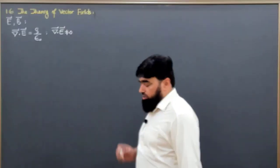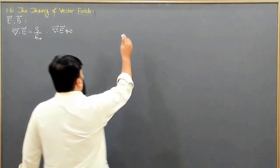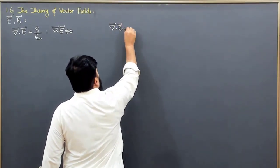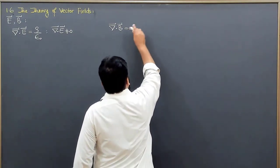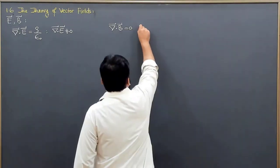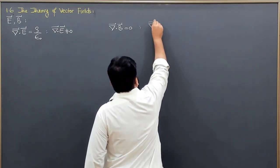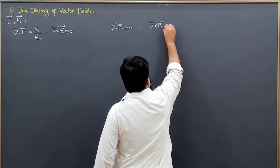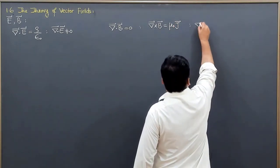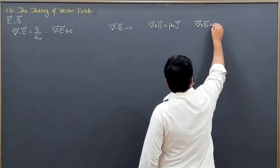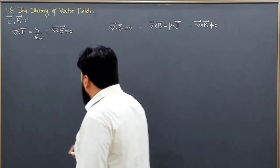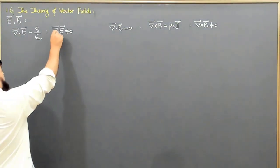Similarly, for the magnetic field, the divergence of the magnetic field is equal to zero. Moving towards the non-zero component, the curl of the magnetic field is equal to μ₀J, meaning the curl of the magnetic field is not equal to zero — it is non-zero. We will now discuss the physical interpretation of this.